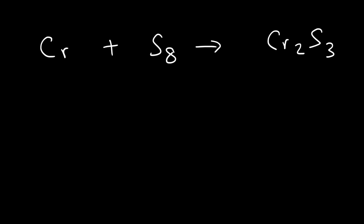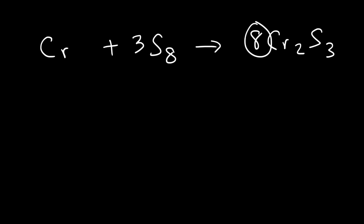Let's start by balancing the first example: chromium plus elemental sulfur reacts to form chromium sulfide. Let's focus on sulfur. We have eight sulfur atoms on the left and three on the right. To find the target, we identify the least common multiple of 8 and 3. If you're not sure, just multiply 8 and 3, which is 24. So we want 24 sulfur atoms on each side. We put a 3 as a coefficient on the left (3 × 8 = 24) and an 8 on the right (8 × 3 = 24). Now the sulfur atoms are balanced.